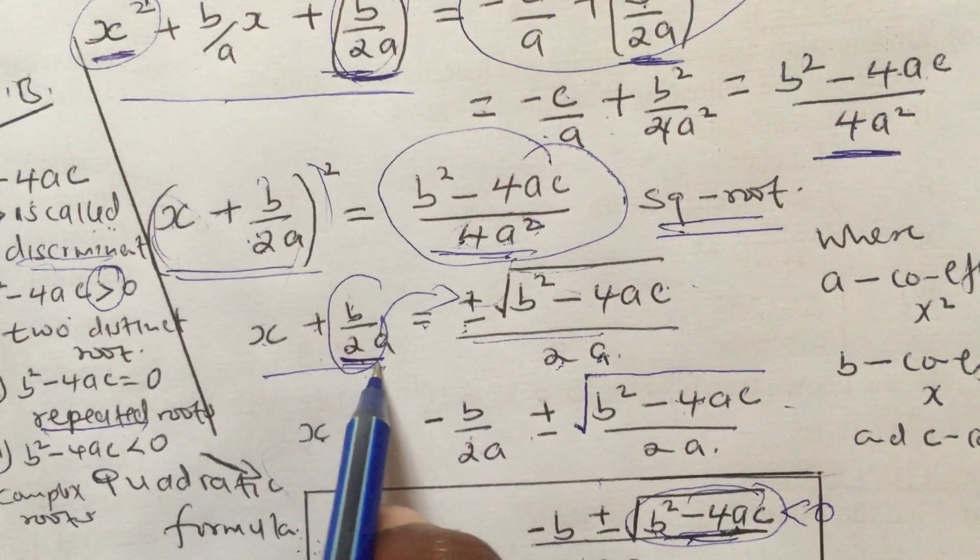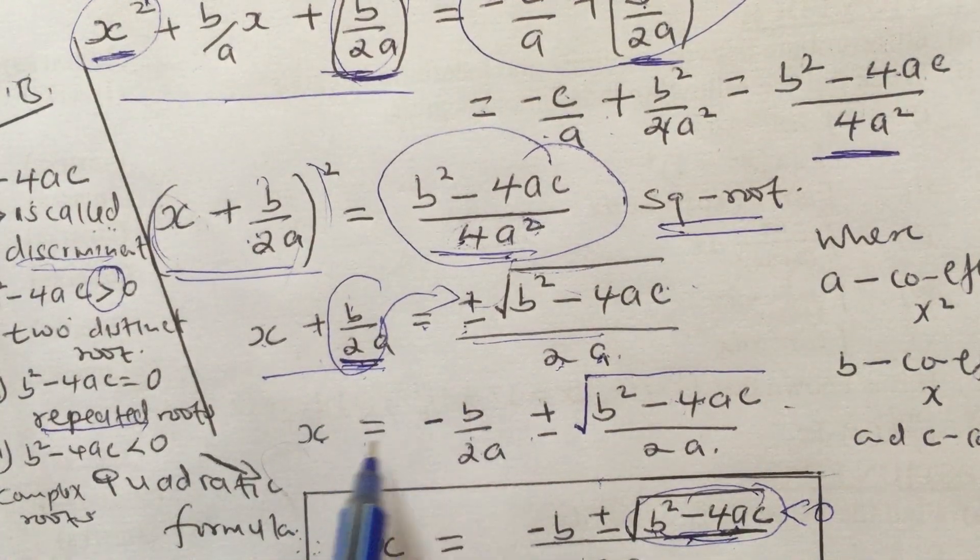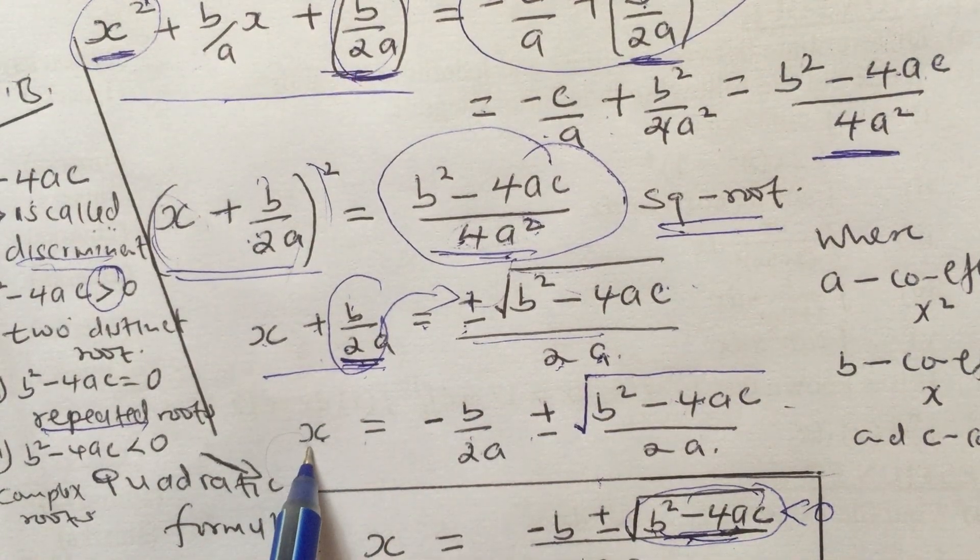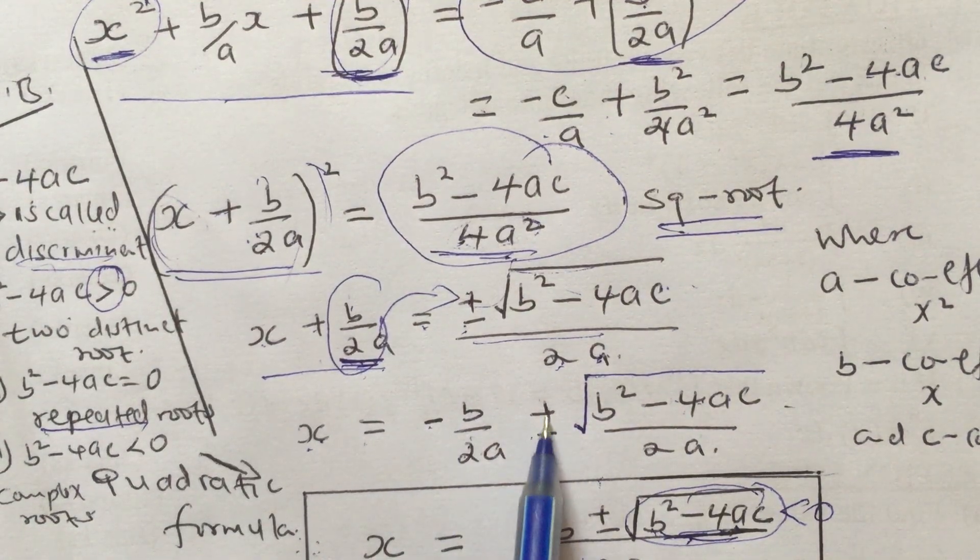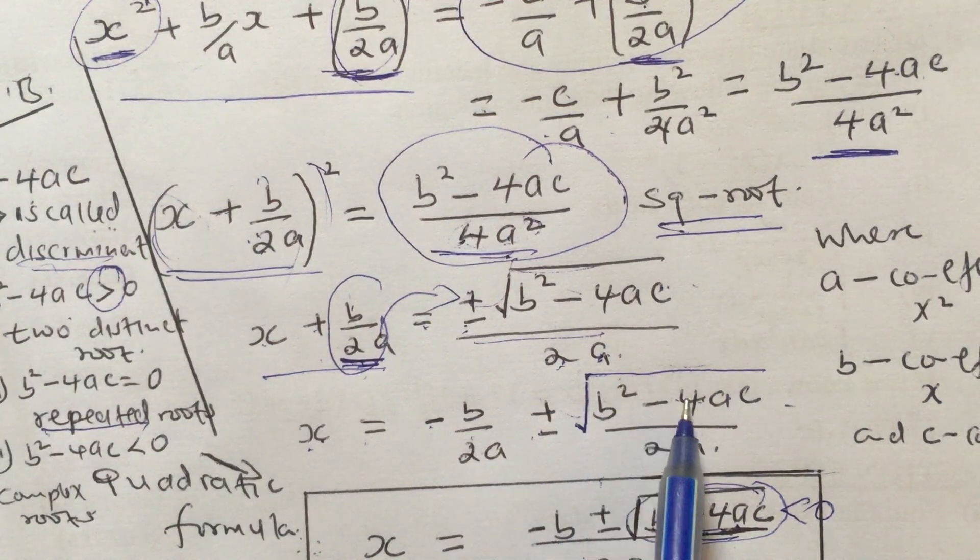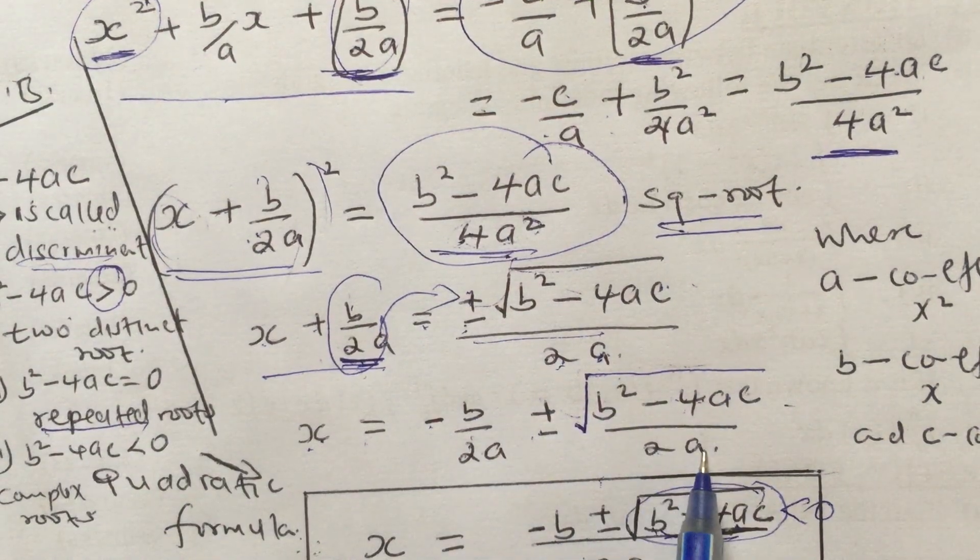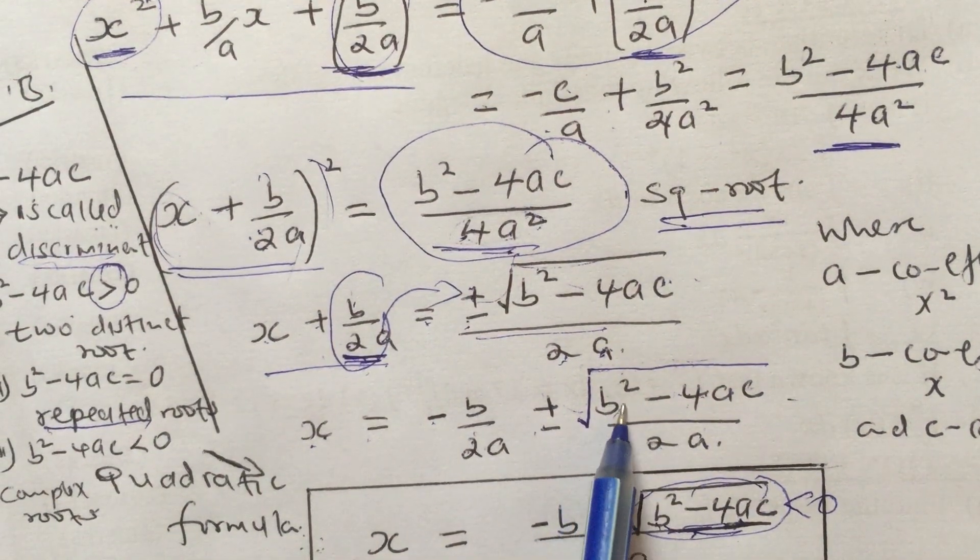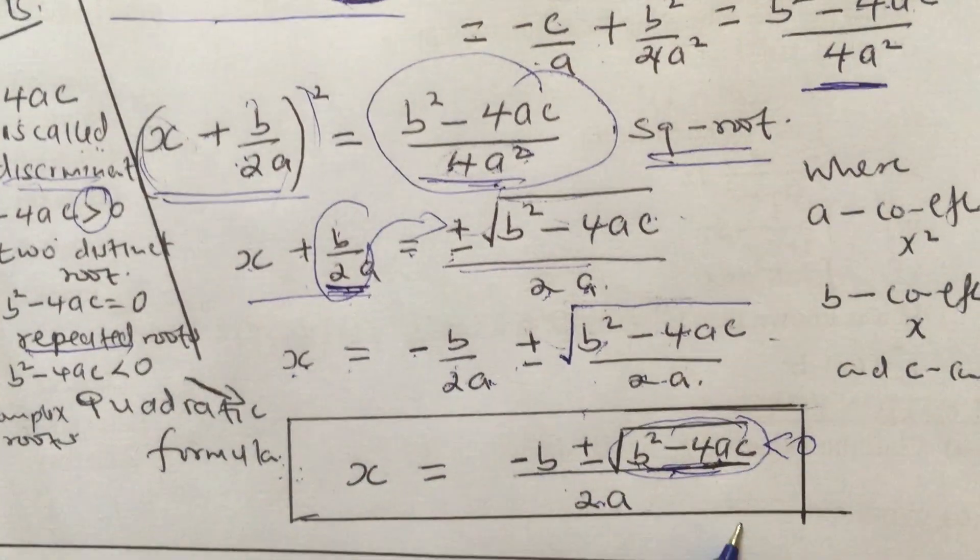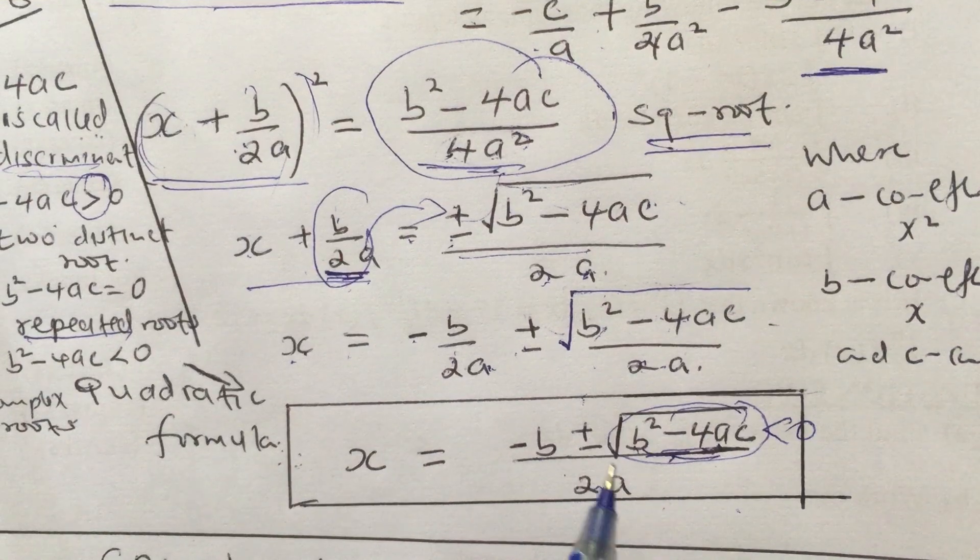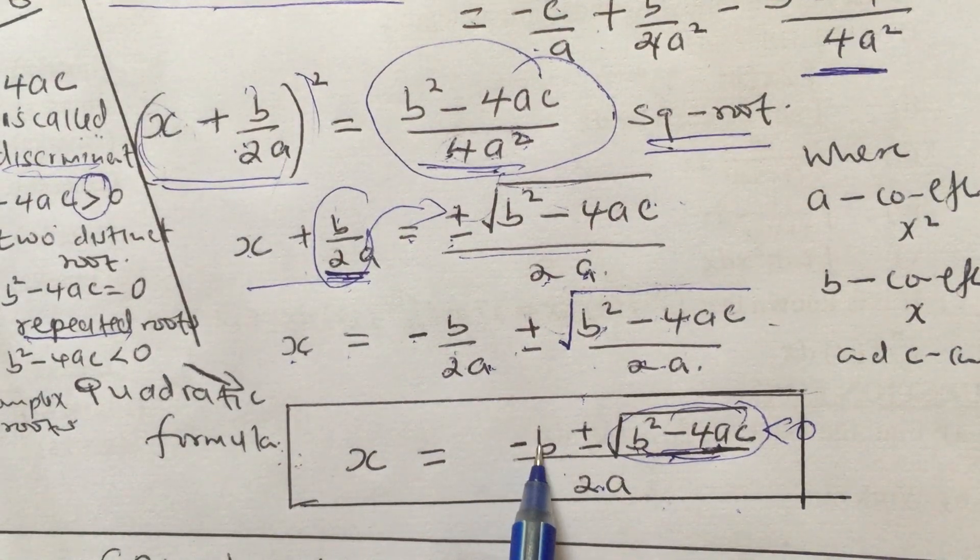Then we take b/2a to the right-hand side, and this leaves us with x = -b/2a ± √(b² - 4ac)/2a. We can merge this together by looking at the LCM of these two.